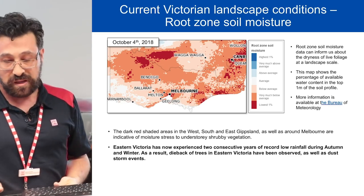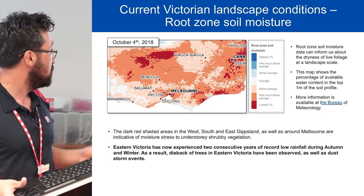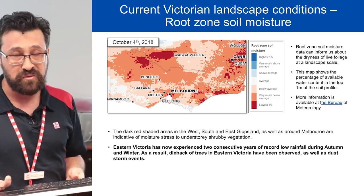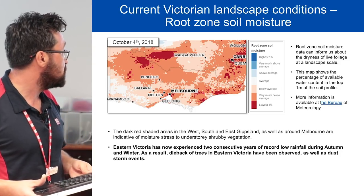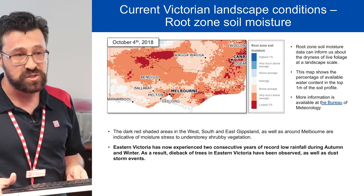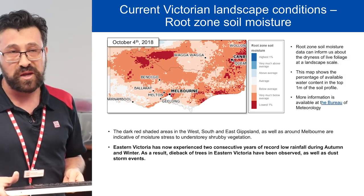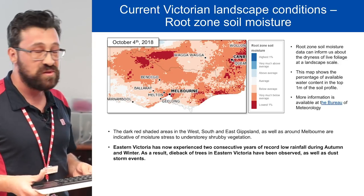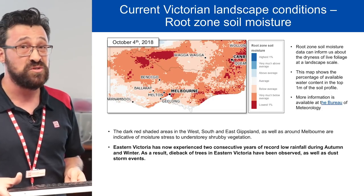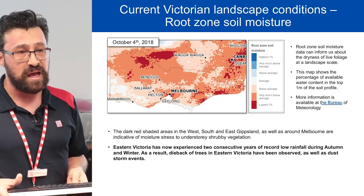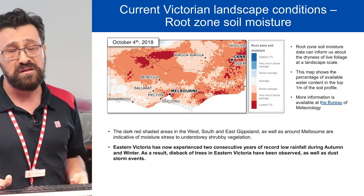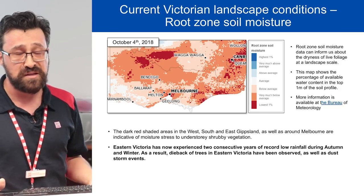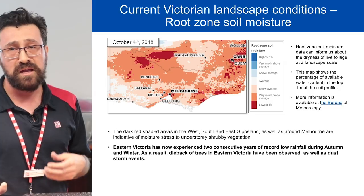Looking at soil moisture conditions as of October 4th, this really shows the underlying dryness caused by rainfall deficits over most of Victoria. The information is presented as deciles, where red or maroon represents lowest on record and blue represents highest on record. Over Victoria, most soil moisture levels are in the very much below average to record low range, which is affecting vegetation growth, particularly in the understory, where fuels are becoming drier and more available to burn.